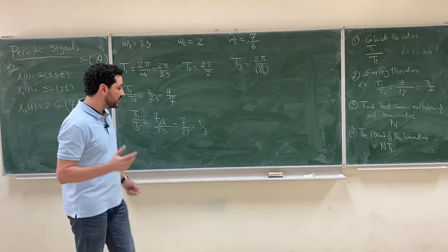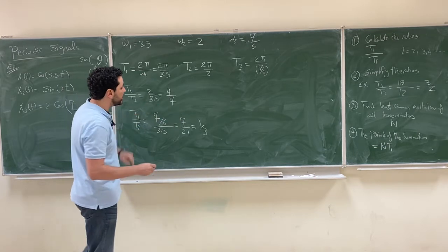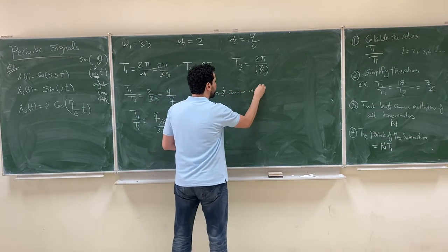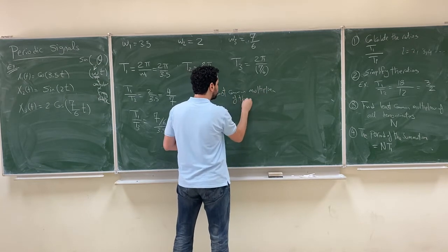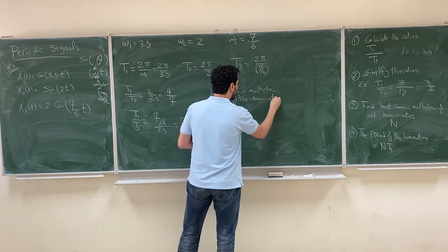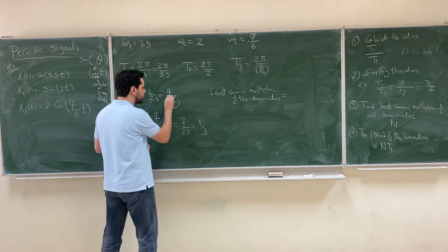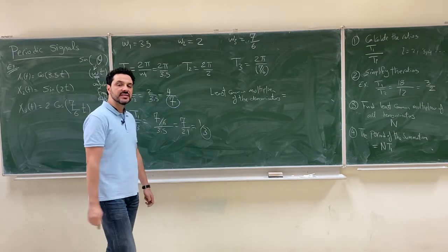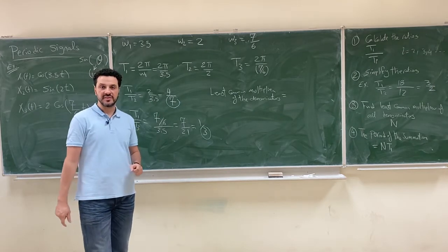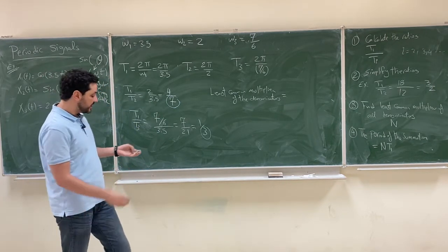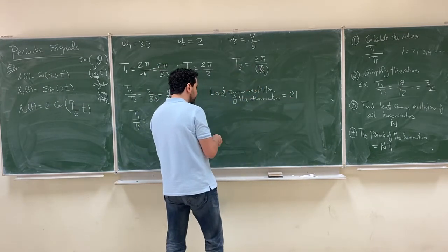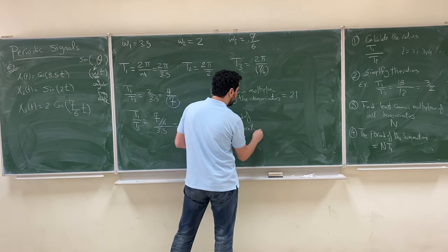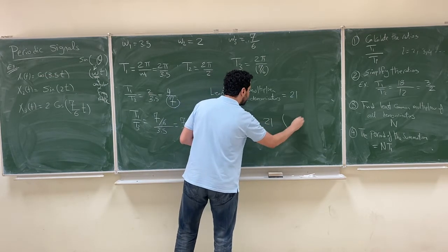We need now to calculate the period. To do that, we find the least common multiplier of the denominators. The denominators from the simplified ratios are 7 and 3. The least common multiplier — the smallest number divisible by both 3 and 7 — is 21. The period of the summation is the LCM multiplied by T₁.